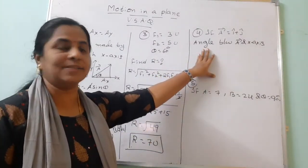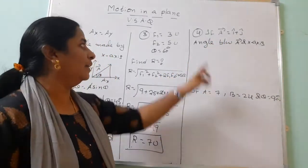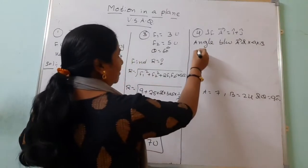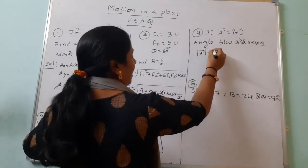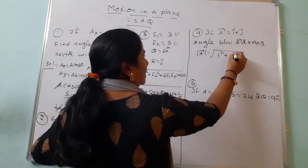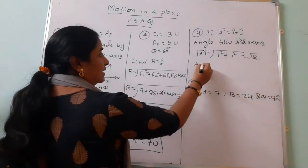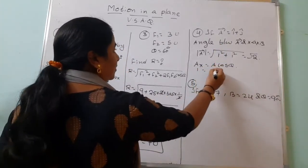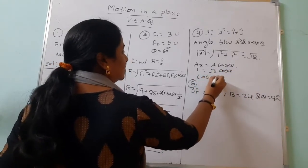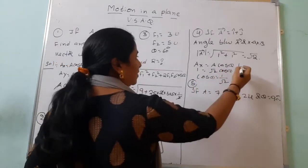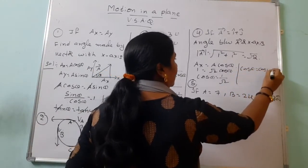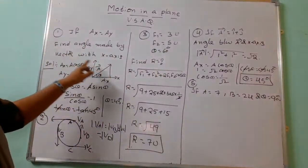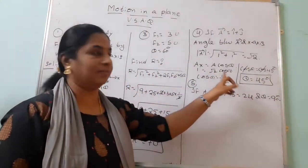The fourth VSAQ: if A = î + ĵ, find the angle between A and the x-axis. The magnitude of A is √(1² + 1²) = √2. Since Ax = A cos θ, we get 1 = √2 cos θ, so cos θ = 1/√2 = cos 45°. Therefore the vector makes an angle of 45 degrees with the x-axis.